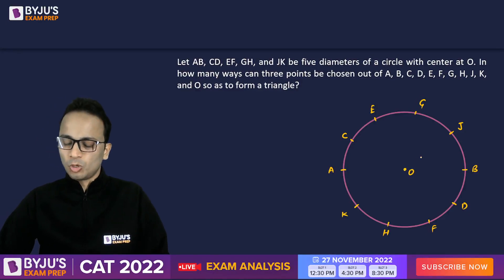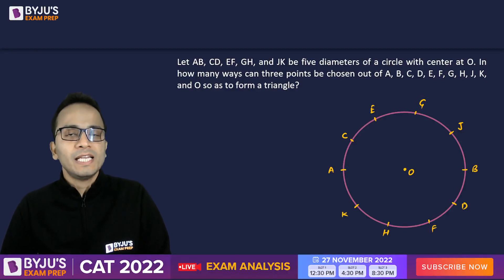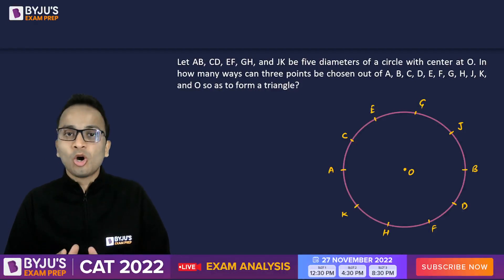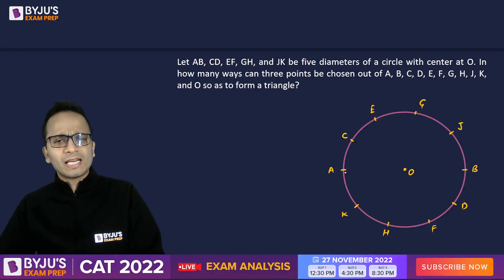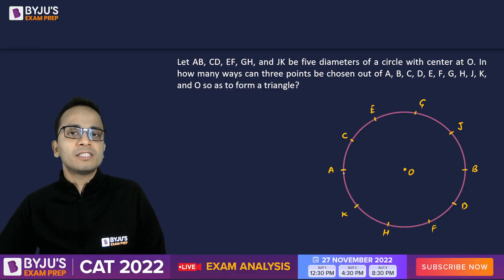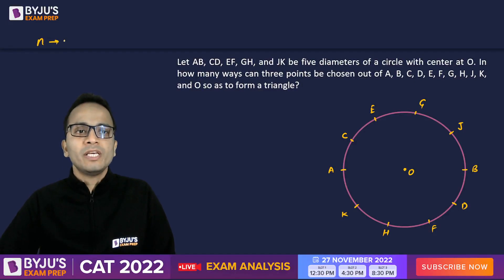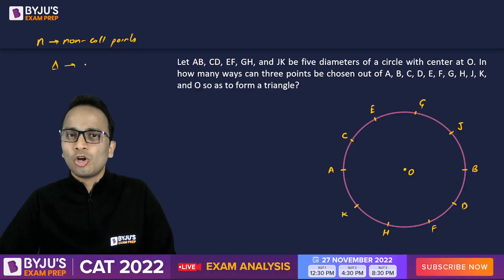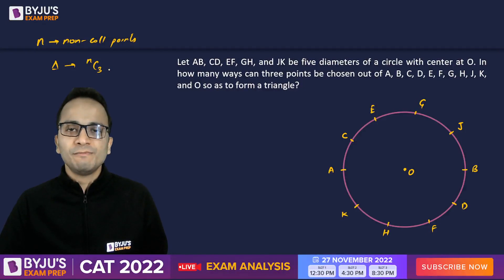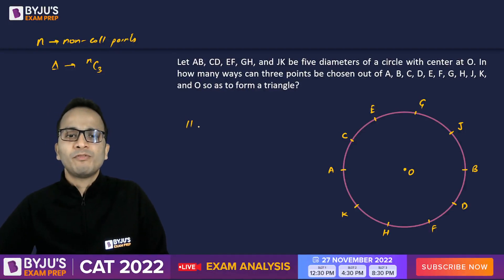The concept says that if we want to find the total number of triangles that can be formed among n non-collinear points, the number of triangles equals nC3 — the number of ways of selecting three points out of n points. So if we consider all 11 points to be non-collinear with respect to each other, then the number of triangles that can be formed will be 11C3.